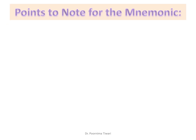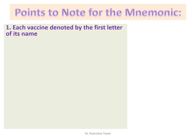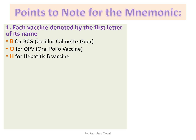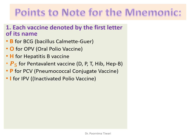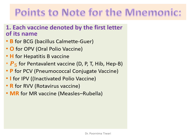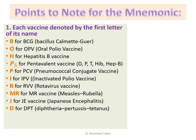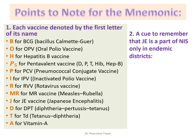When creating the mnemonic, each vaccine is represented by the first letter of its name. The list: B for BCG, O for OPV, H for Hepatitis B, P5 for Pentavalent, P for Pneumococcal Conjugate Vaccine, I for IPV (given in a fractional dose), R for Rotavirus vaccine, MR for Measles-Rubella vaccine, J for JE, T for DPT, T for TD, and A for Vitamin A.